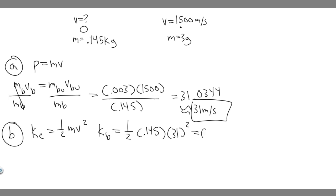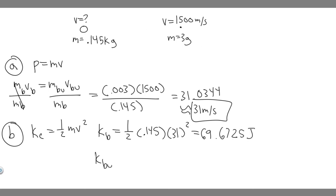When you calculate ½ × 0.145 × 31², you get 69.6725 joules. Now for the bullet: it's ½ times its mass in kilograms, 0.003, times 1,500 squared. So 0.5 × 0.003 × 1,500² gives you 3,375 joules.